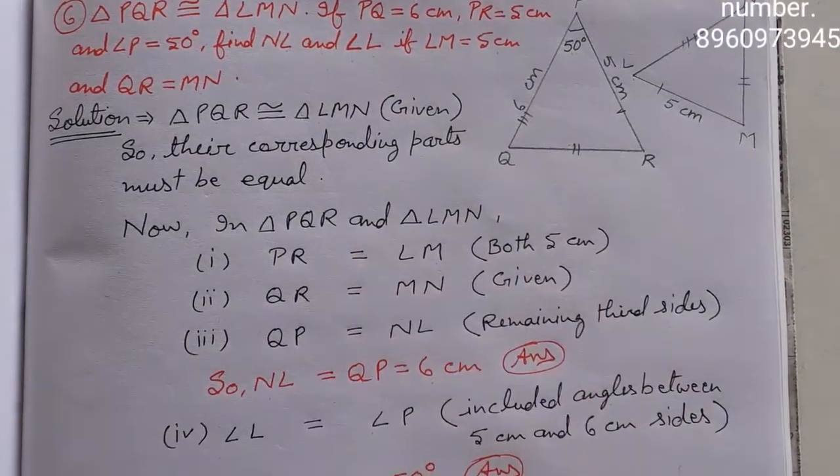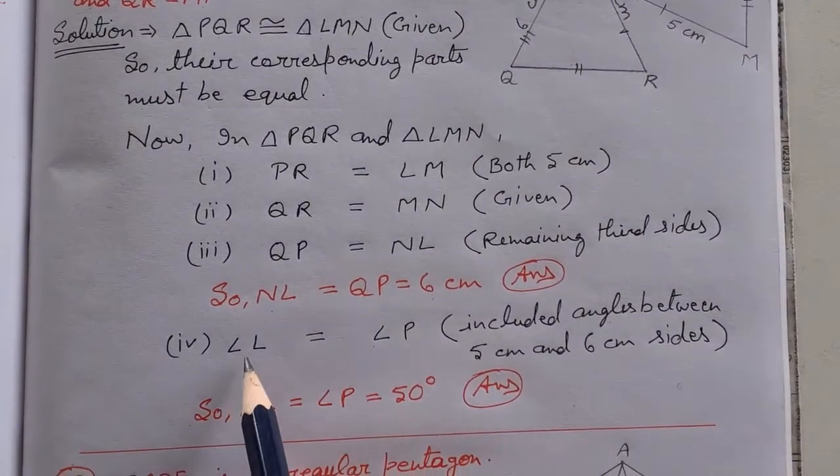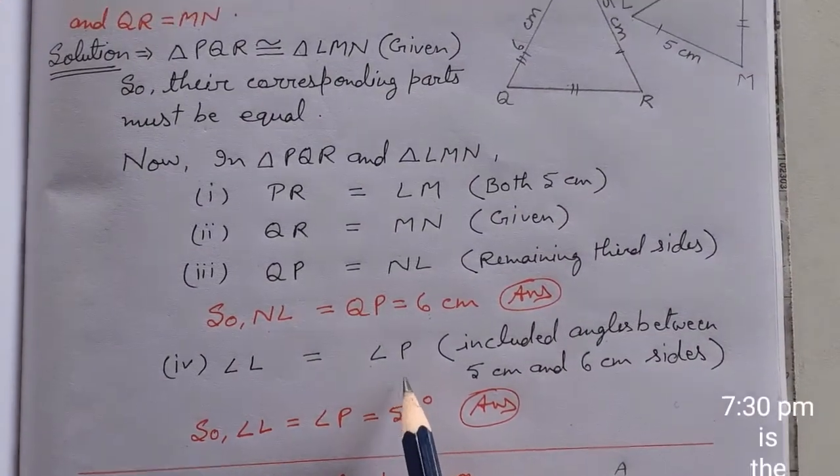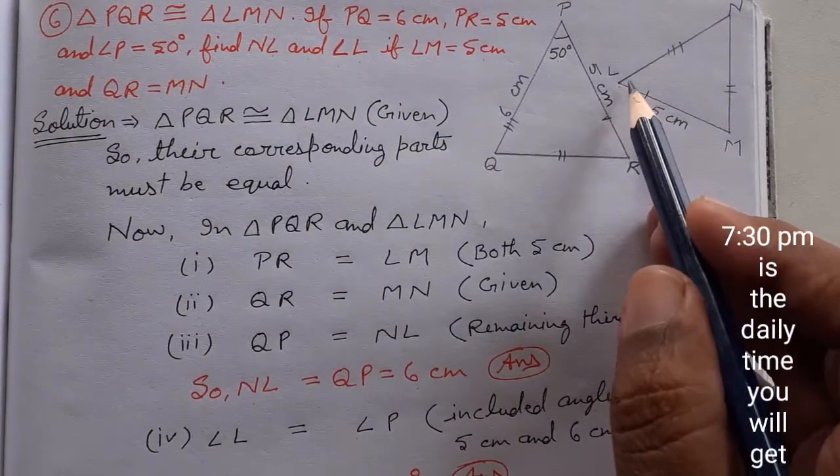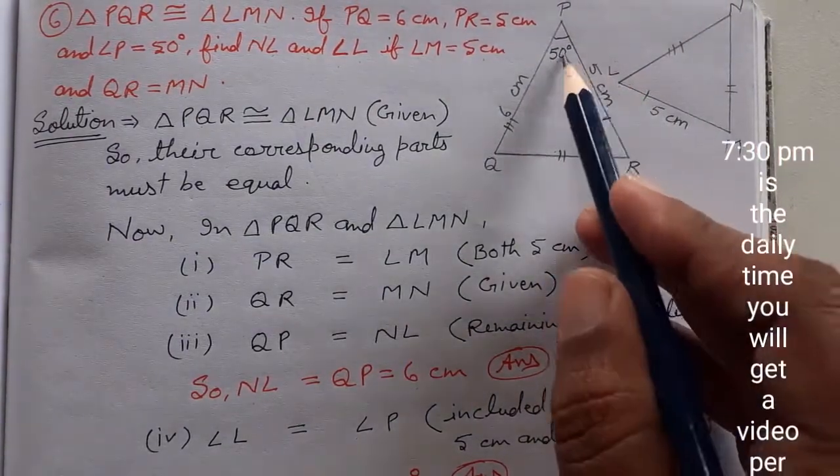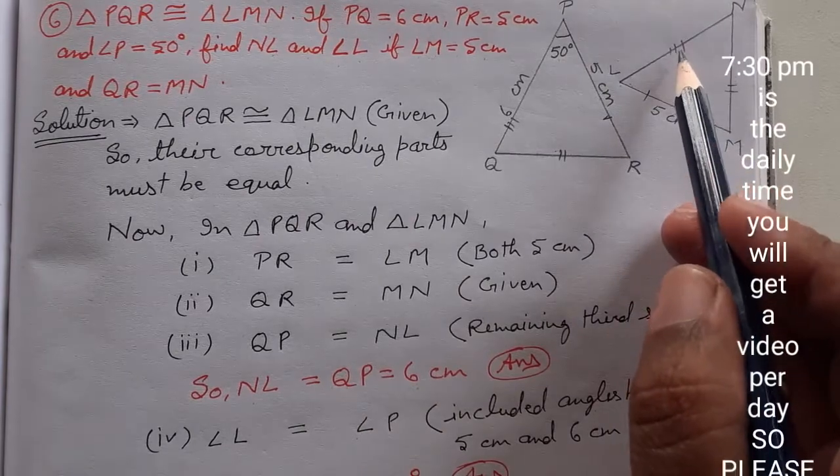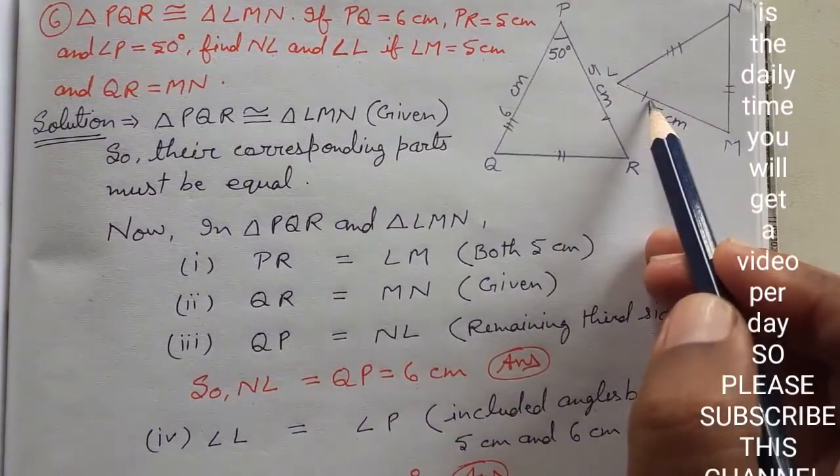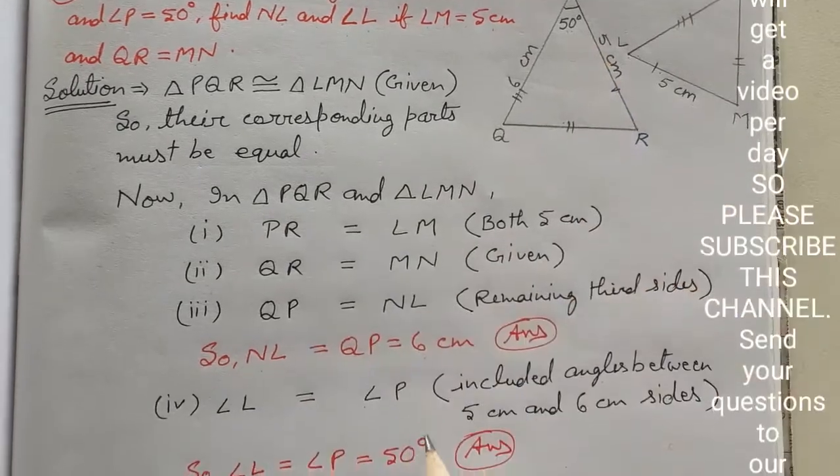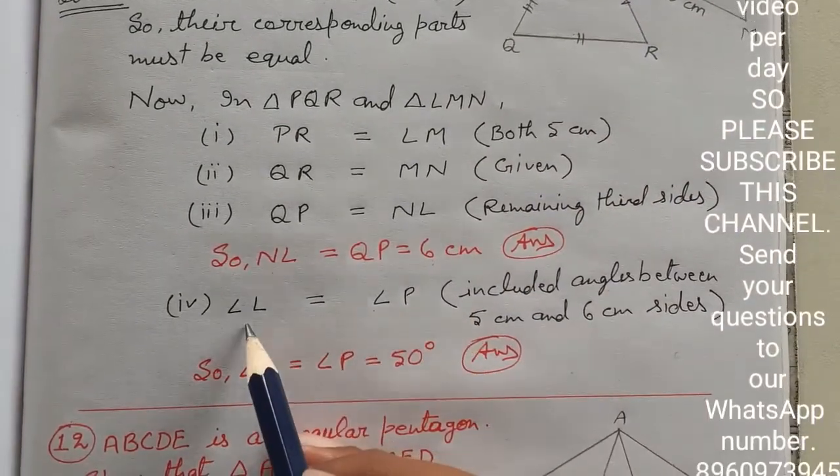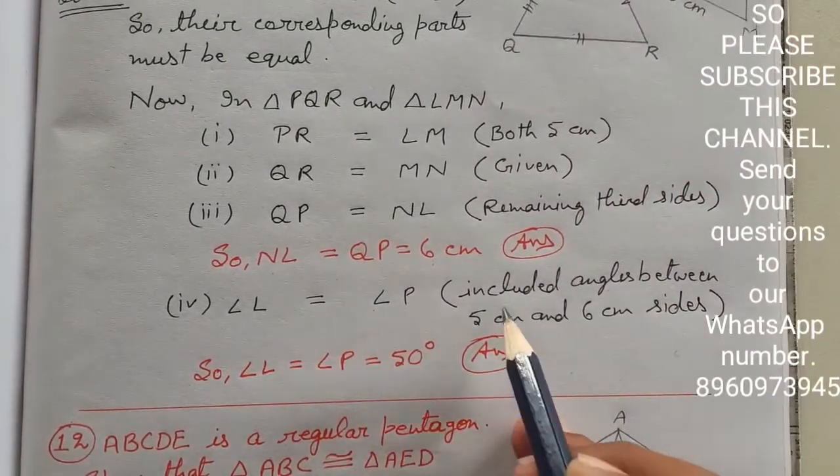Second, we were asked to find angle L. Let's see how to find angle L. Angle L equals angle P. Let me take you back to the figure. Angle L is equivalent to angle P because this third side and first side are between them.